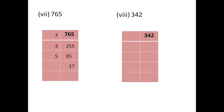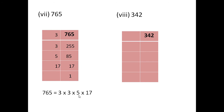Now, 17 is also a prime number. So, we will divide 17 by 17 and get 1. These are the prime factors of 765. Let us write them in product form: 765 is 3 multiplied by 3 multiplied by 5 multiplied by 17, that is 3² multiplied by 5 multiplied by 17.